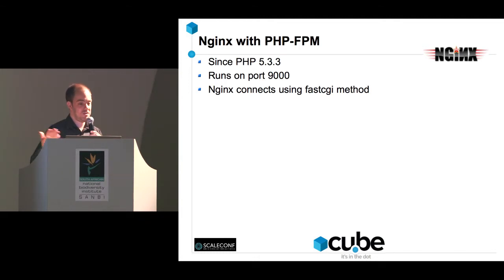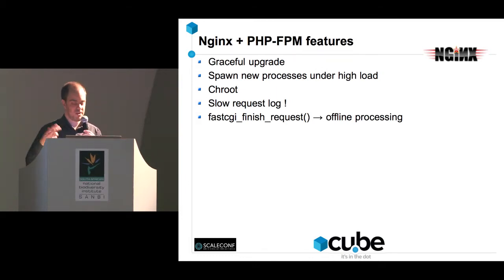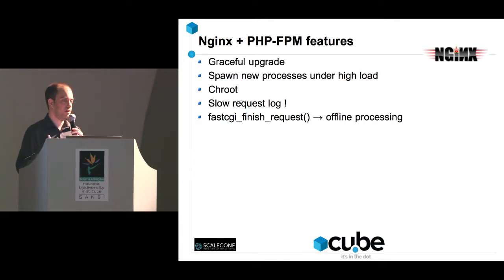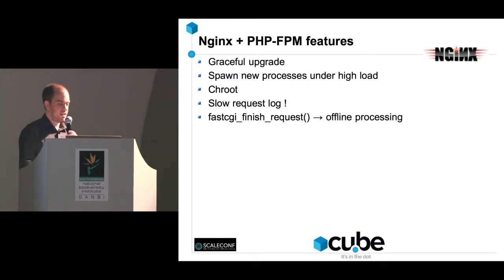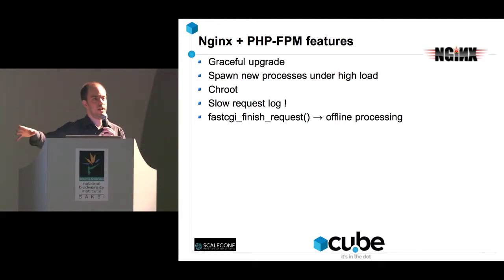Since I'm mostly into PHP, here are two slides about nginx with PHP-FPM. PHP-FPM allows you to connect directly to nginx instead of having Apache in between. You can upgrade your PHP version while it's running without restarting anything, spawn new processes under higher load, and run PHP under a specific user and group for security. There's also a slow request log similar to the database slow query log — it tells you which script is running slow on which line. There's also fastcgi_finish_request, which allows offline processing: tell the user the upload is done, then do the image resizing in the background.